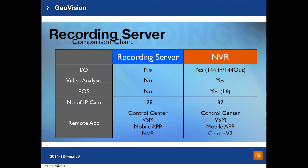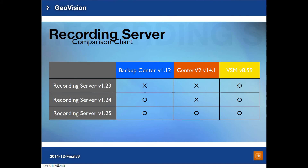The number of cameras supported for Recording Server is 128, compared to MVR where the maximum is only 32. For remote apps, Recording Server supports Control Center, VSM, mobile applications, and GV MVR. For MVR, it supports Control Center, VSM, mobile apps, and Center V2.